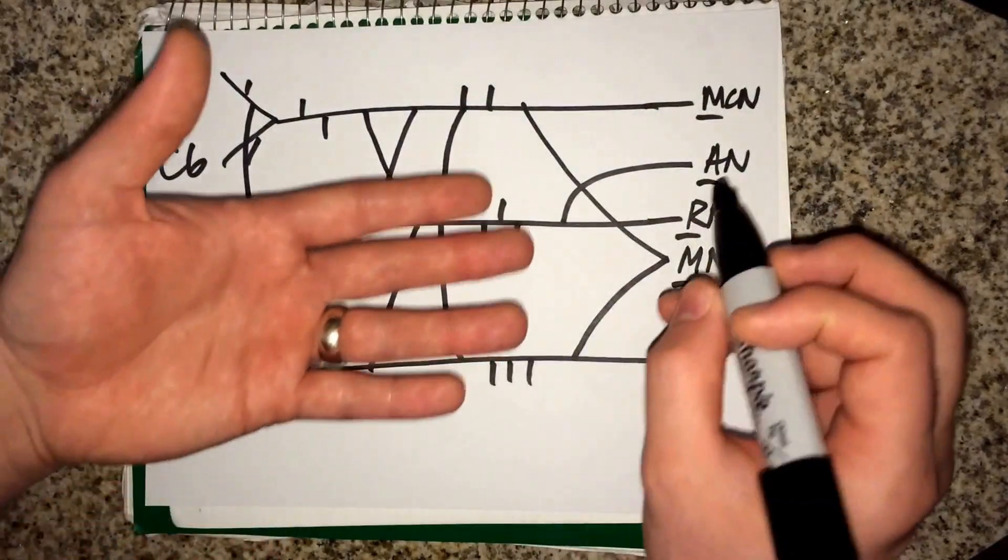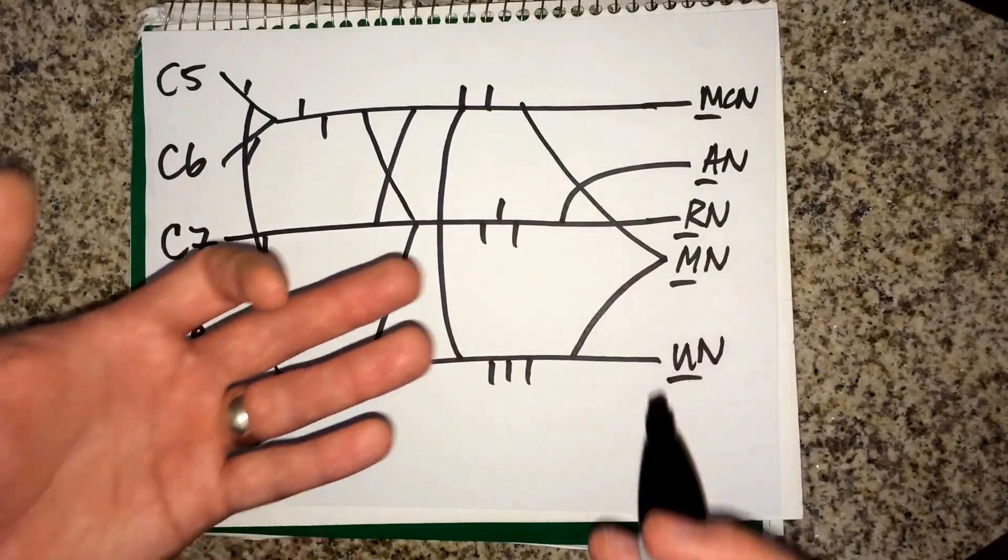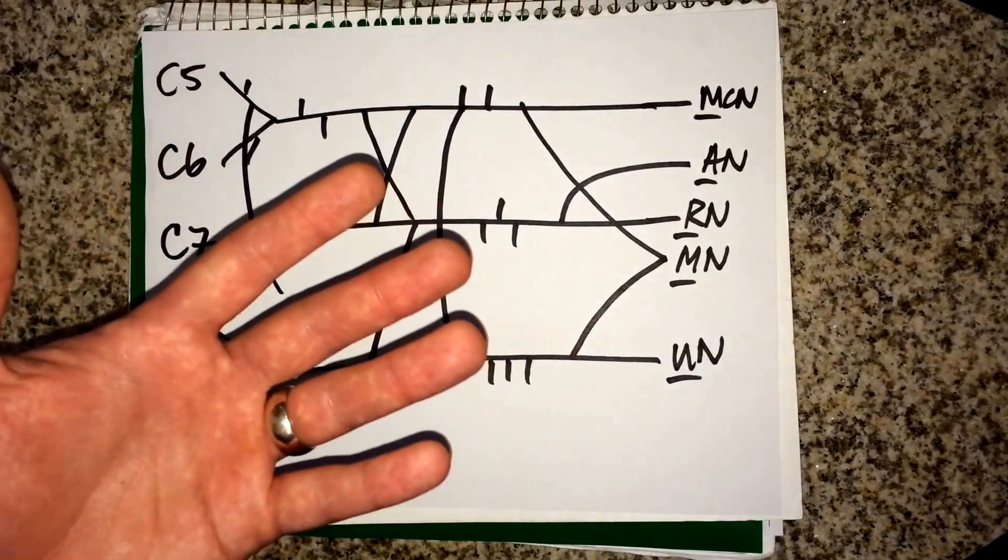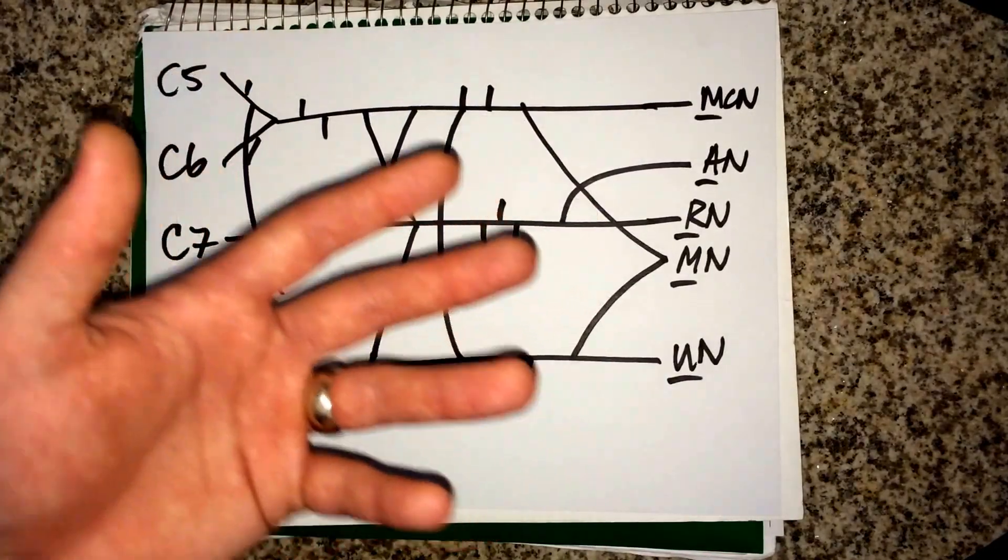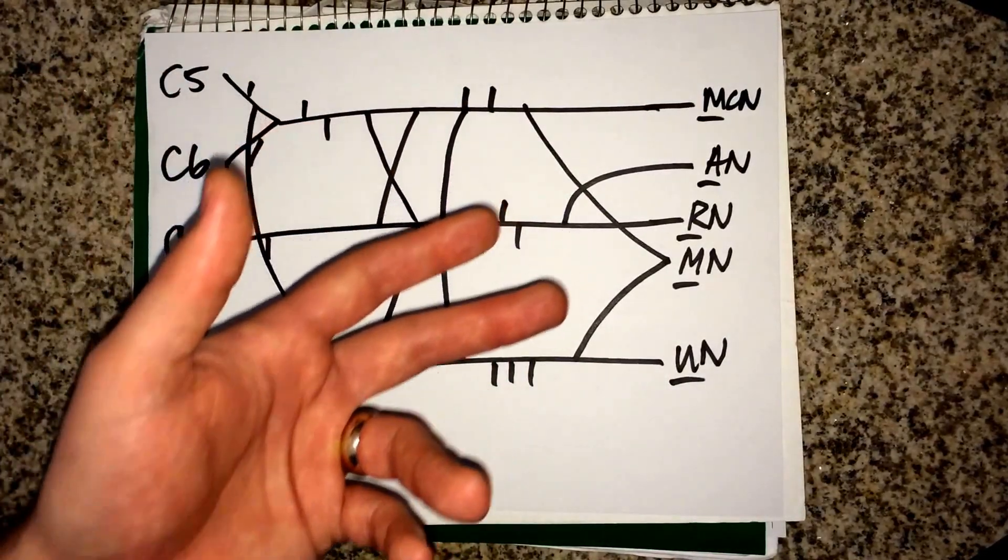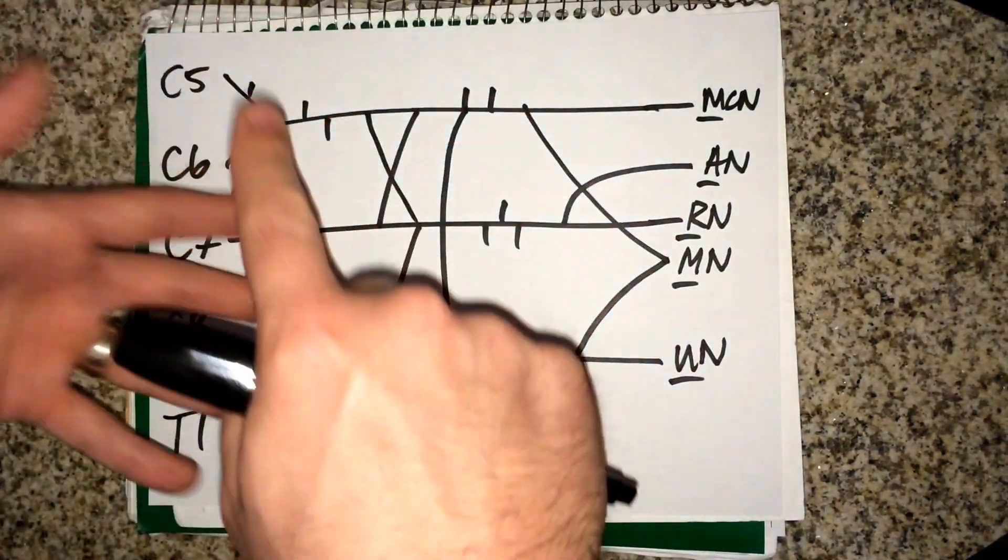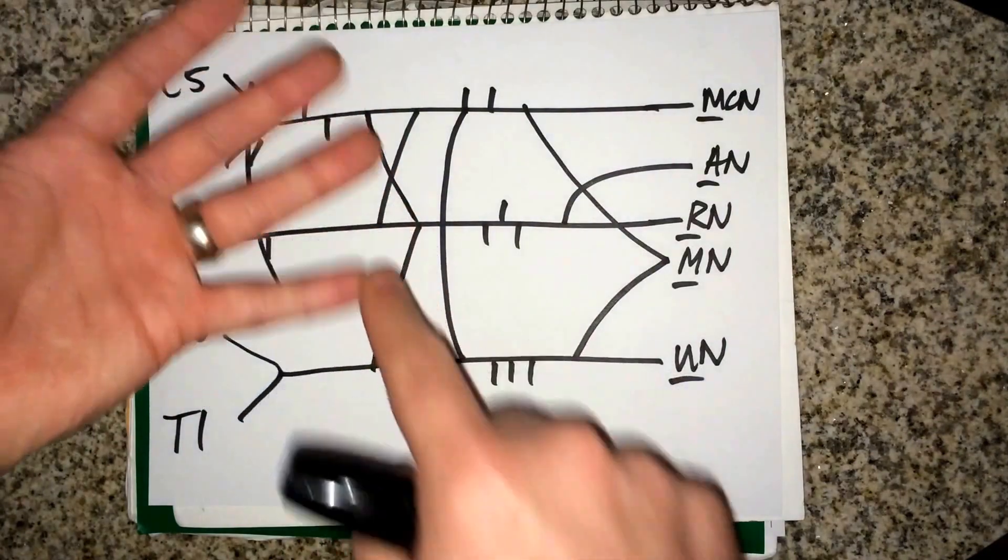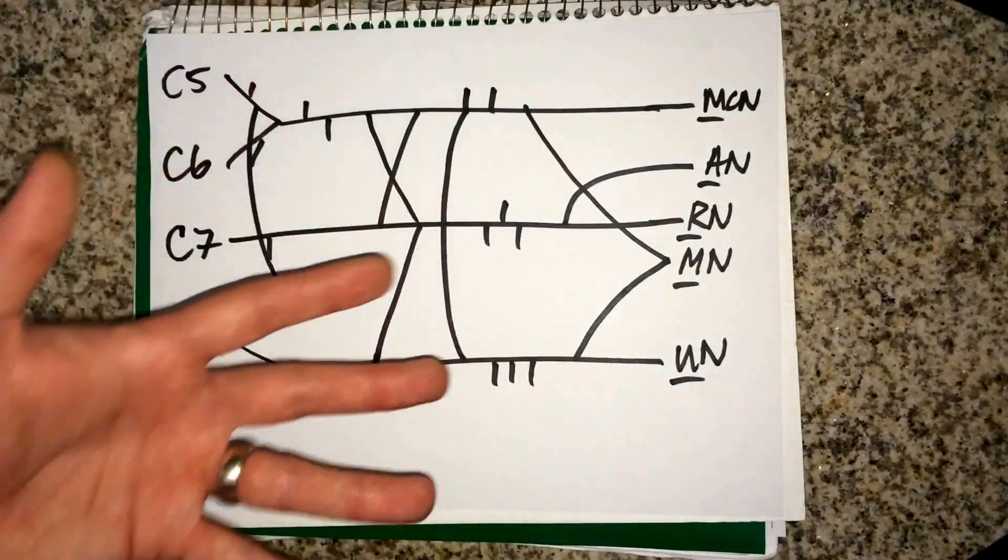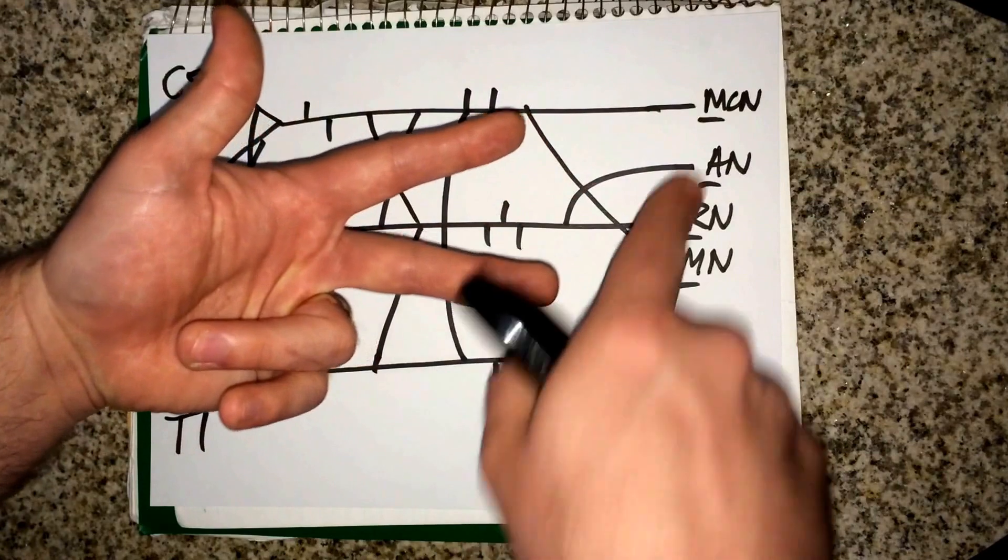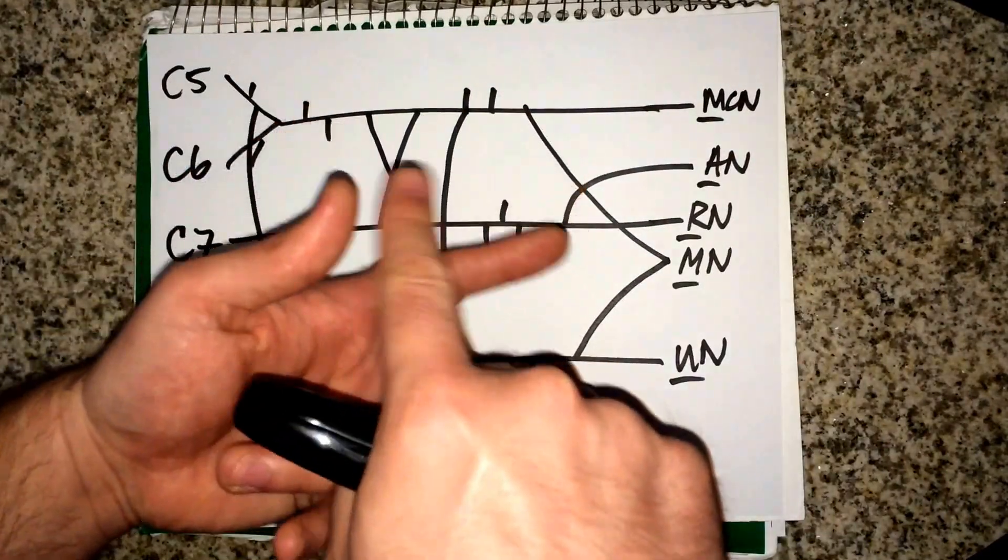So a good way to remember this is with this little hand trick. So with musculocutaneous nerve, you want to do three musketeers. So your fingers match the spinal levels right here. C5, C6, C7, C8, T1. Just like that. So three musketeers is for musculocutaneous nerve. And that's C5 to C7.